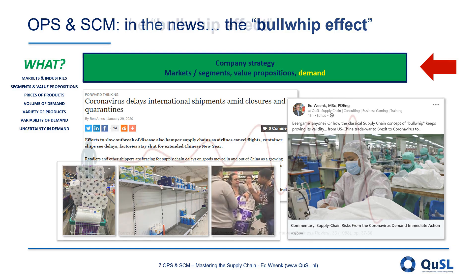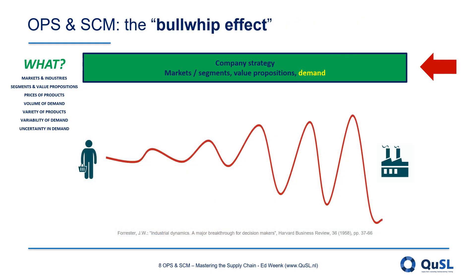Already in the late 1950s, Jay Forrester coined the bullwhip effect, sometimes also called the Forrester effect. It states that a small variation of demand at the so-called downstream consumer level in the supply chain will lead to large variations of demand at the upstream level, where manufacturing or raw materials are located.